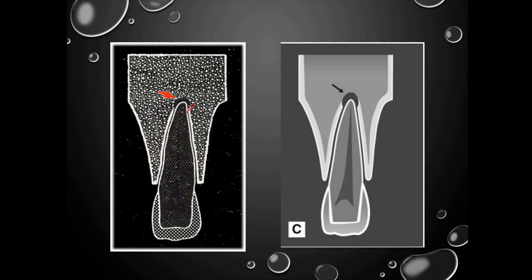As the swelling ruptures, pus drains and pain decreases. On the radiograph you can see loss of lamina dura or discontinuous lamina dura at the periapex, and a small radiolucency or just widened periodontal ligament space at the periapex with the loss of lamina dura.